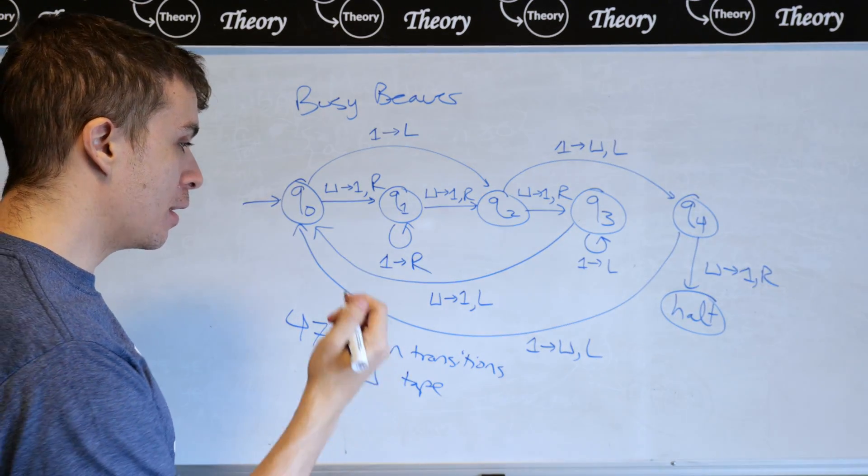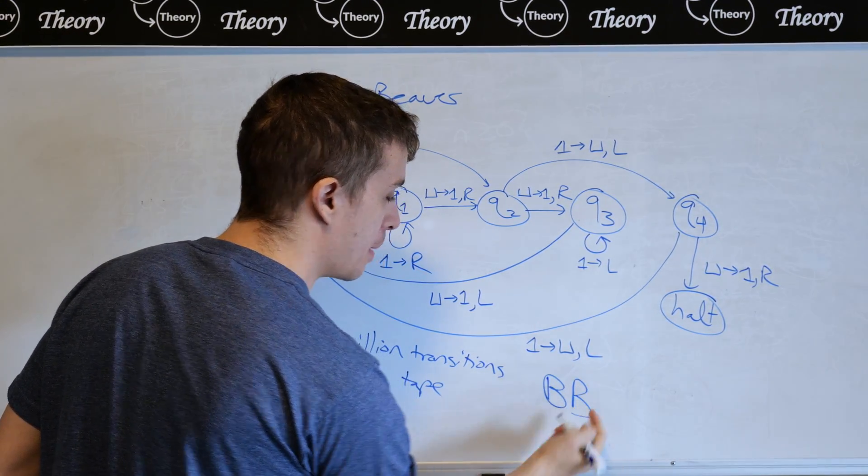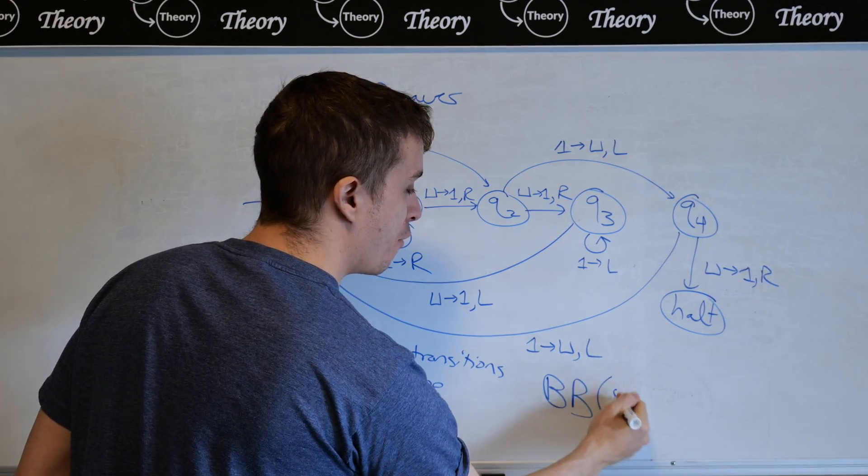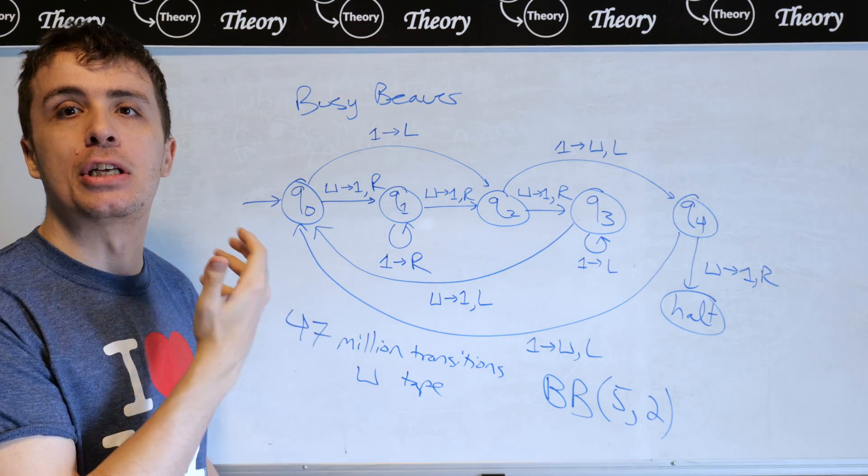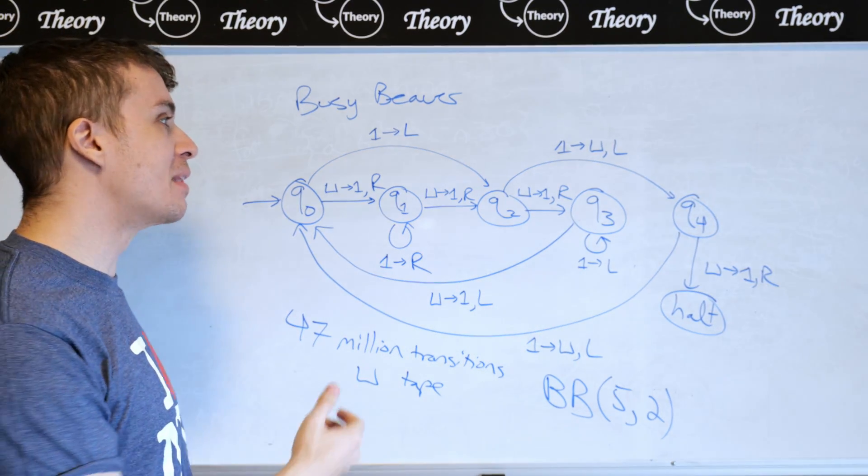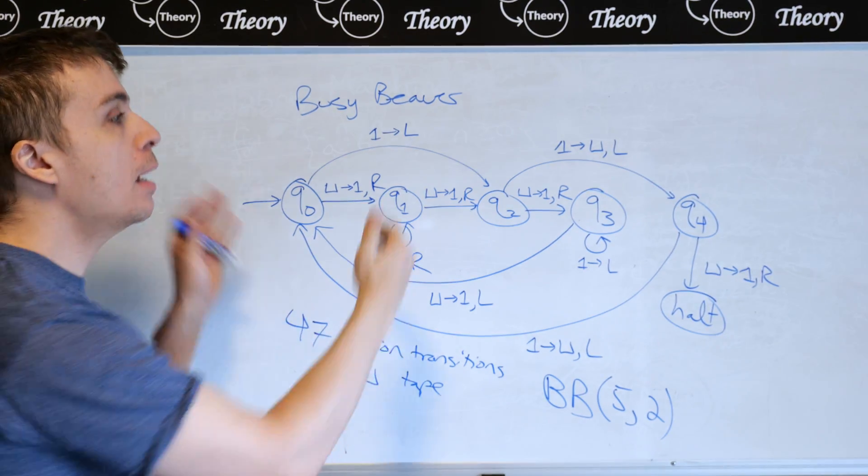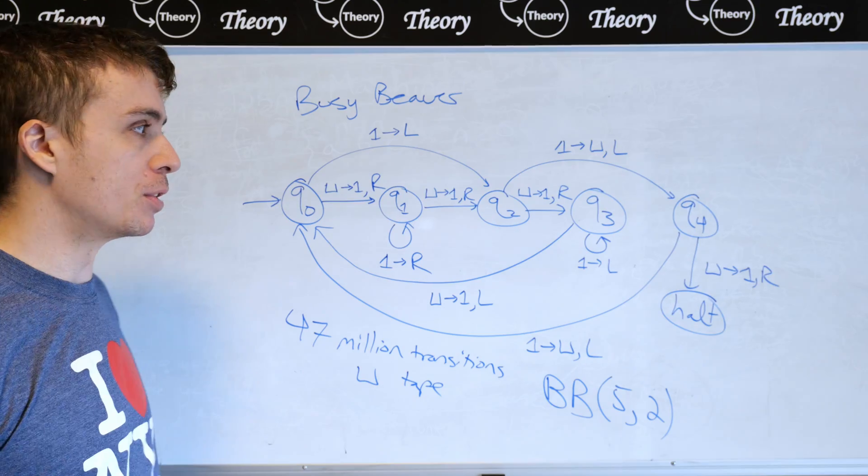And the current open question is determining the busy beaver number, so it's abbreviated BB here, with five states and two tape symbols. So this machine is the current candidate for what is believed to be the longest running Turing machine with five states minus the halt state and two tape symbols.